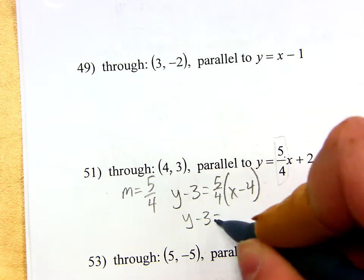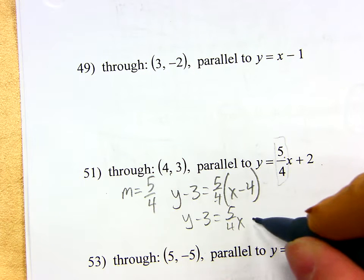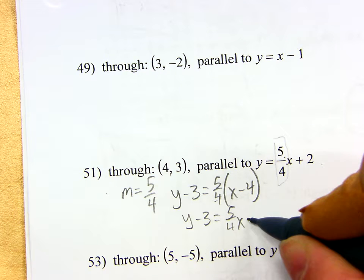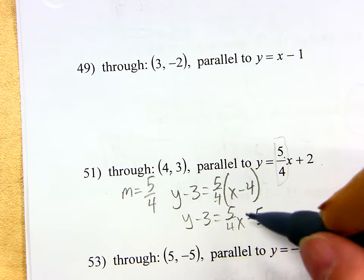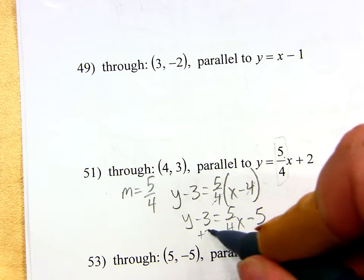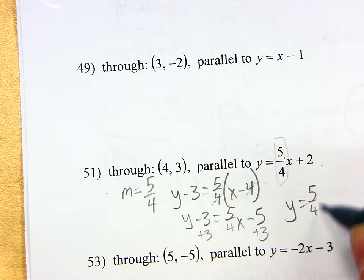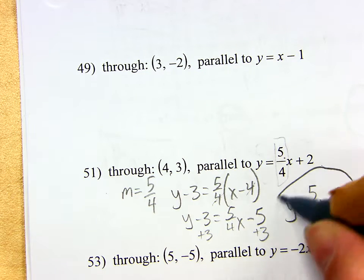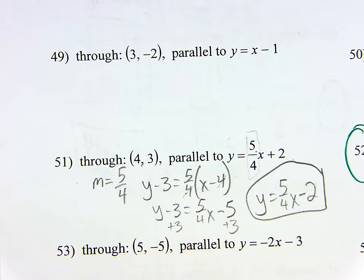Just distribute that 5 fourths. What's 5 fourths times negative 4? If you said negative 5, you're right, because those would cancel. And now all I have to do is add the 3 to the other side. And I'm done. Y equals 5 fourths X minus 2. Let's see if you got that one right.